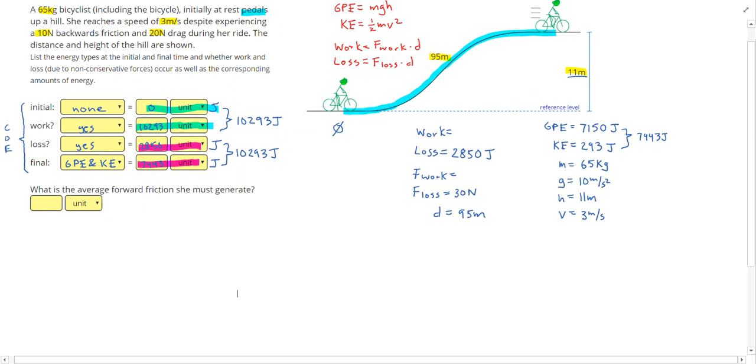That means my work was 10,293 joules. If I manipulate the equation, F work equals, or work equals force causing the work times distance, that can change to the force doing the work is going to equal the work divided by the distance, just dividing that equation above, dividing both sides by D. So if I do 10,293 and divide by 95, I get 108. And that's going to be newtons because that's a force, and that is the average forward friction because forward friction is the force from pedaling, that's the force doing the work. And so I can just put 108 newtons from my forward friction.